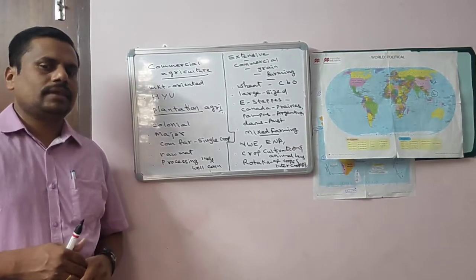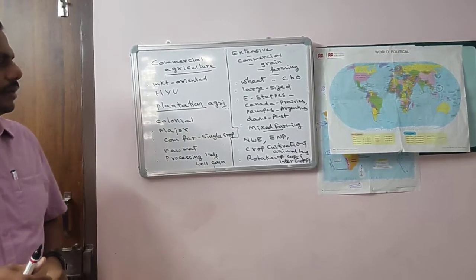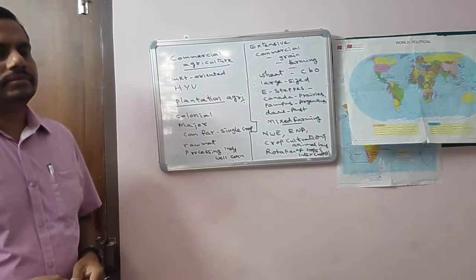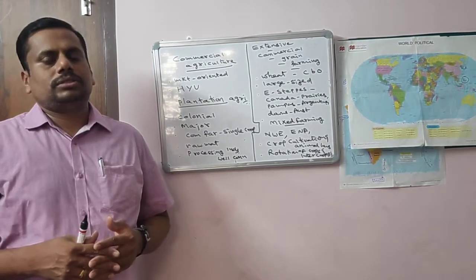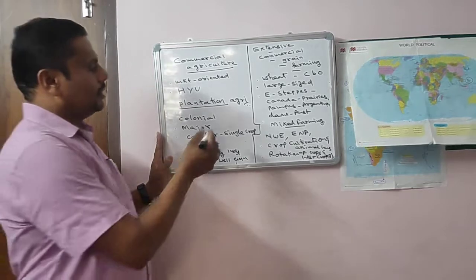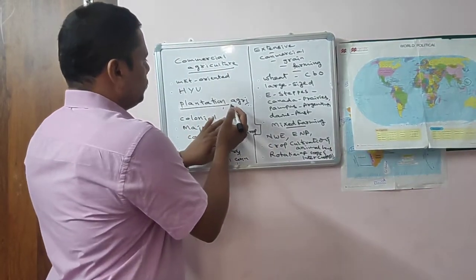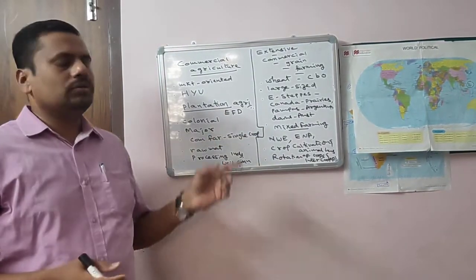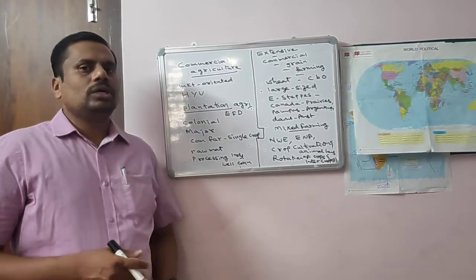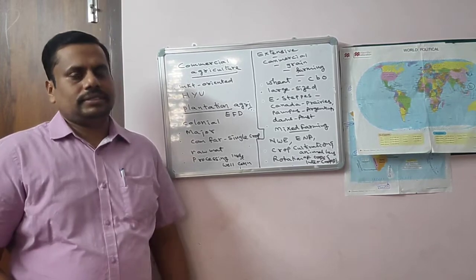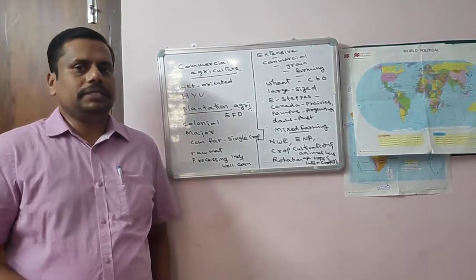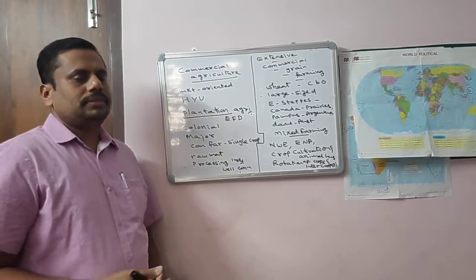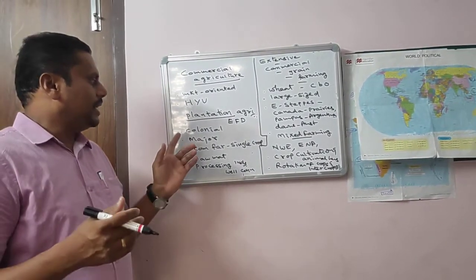Plantation agriculture was introduced by colonial rulers in tropical and subtropical colonies. Particularly, English, French, and Dutch colonial rulers introduced this type of plantation crops in tropical and subtropical colonies. Since India is also one of the colonies of the British, these people introduced this kind of crop in our country also.